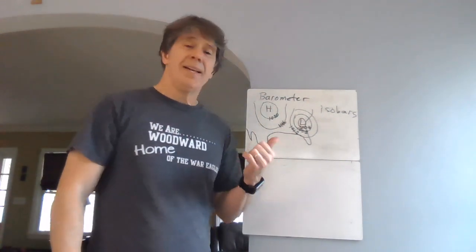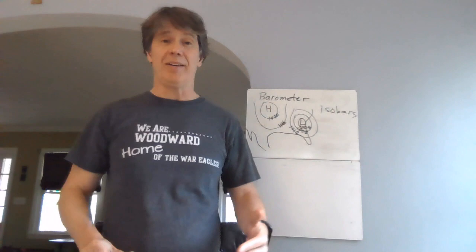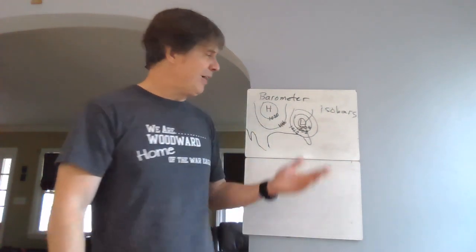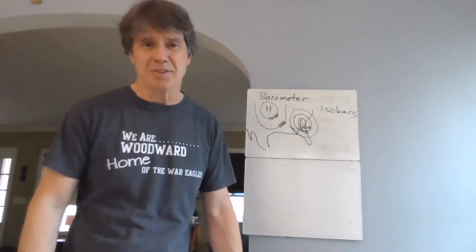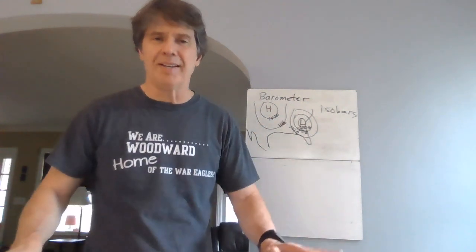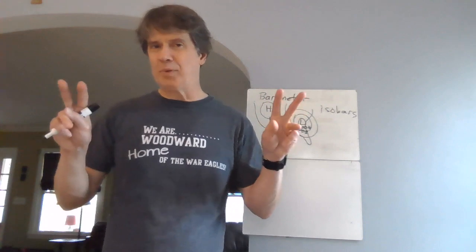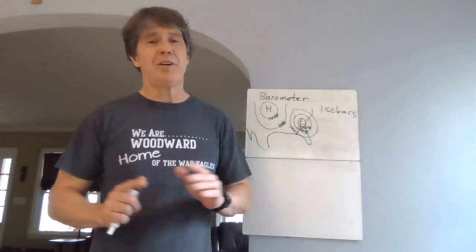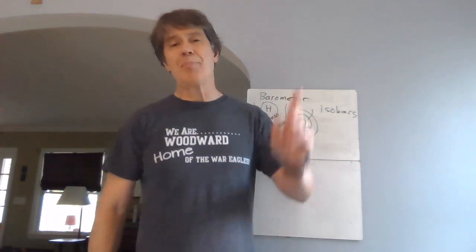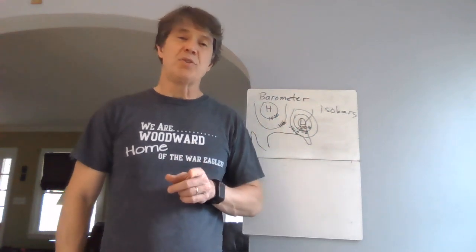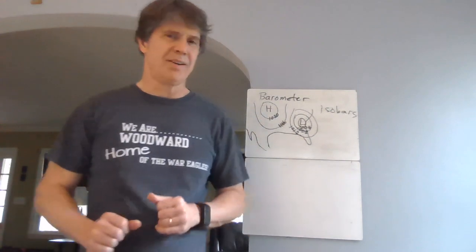Another important point: these pressures are reduced to sea level. Pressure naturally varies with elevation anyway — if you live up on a mountain, the pressure is lower. If I showed the real pressure at the surface, it would turn into a topographic map of elevations rather than a map of weather conditions. So they use procedures for converting actual measured pressure to what it would be at sea level. A very rough rule of thumb is about an inch of mercury or about 33-34 millibars for every thousand feet of altitude.